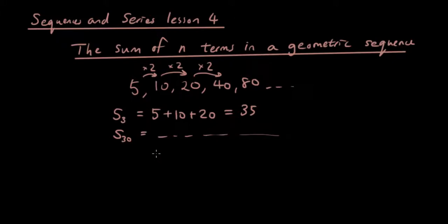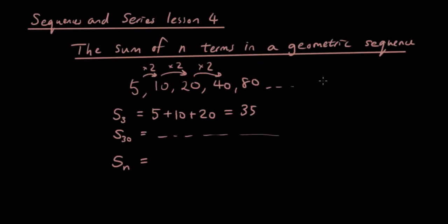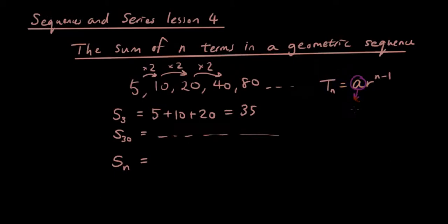How do we get the formula? Let's try and make it up from scratch. Just before we start, let's remind you what the formula for a geometric sequence is. The nth term in a geometric sequence is a times r to the power of n minus 1, where a in this case is 5, which is the first term, and r is 2, which is the multiplication factor.